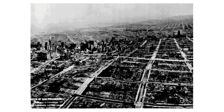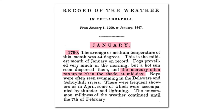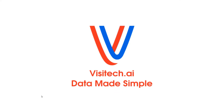In just over four minutes we learned a lot of historical climate and weather information by using app.visitech.ai. Here's some more interesting information about past Januaries: it's pretty cold in Philadelphia now, but during January 1790 — which was George Washington's first month in office — it was very warm there. The mercury often ran up to 70 degrees in the shade at midday, and boys were often seen swimming in the rivers. Visitech.ai is a very powerful application for learning about climate and weather, but it's also equally useful for many other types of data.